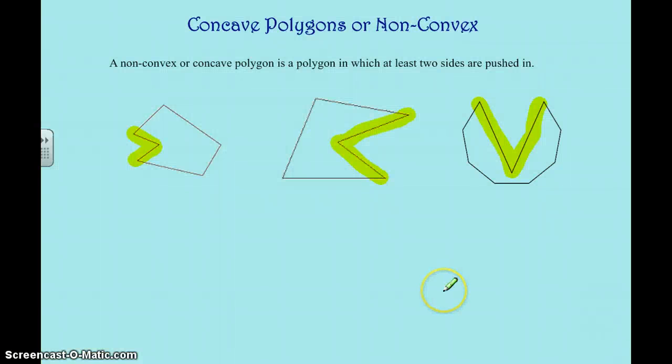Alright. Next is concave polygons, also known as non-convex. So you could say concave, a.k.a. non-convex polygons. And they're polygons in which at least two sides are pushed inward, pushed toward the interior of the shape. So pushed in.